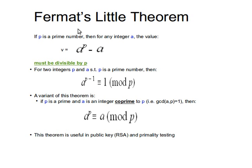Moving on to the main point: Fermat's Little Theorem. What this says is: let's say we have a prime number P. For any integer number A, the value A to the power P minus A must be divisible by P — i.e., P divides the result of this expression evenly. So if you have a prime number P and any integer A, then A to the power P minus A must be divisible by P.